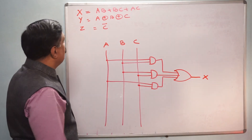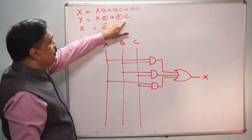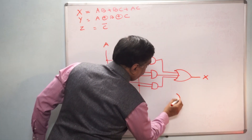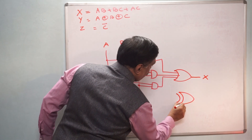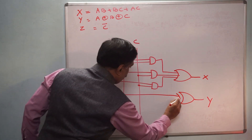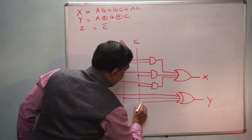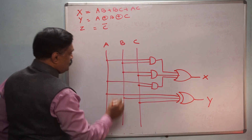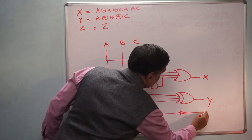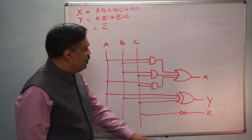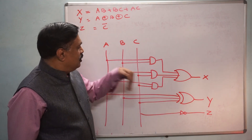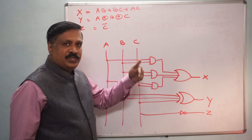When drawing the circuit, all three AND gates should be in a straight line, then connected to the OR gate — that output is X. For Y, which is A XOR B XOR C, you connect an XOR gate taking A, B, and C — that output is Y. For Z = C̄, take the C line and connect it through a NOT gate — that output is Z. These are all the inputs and outputs, generating as desired by the equations.